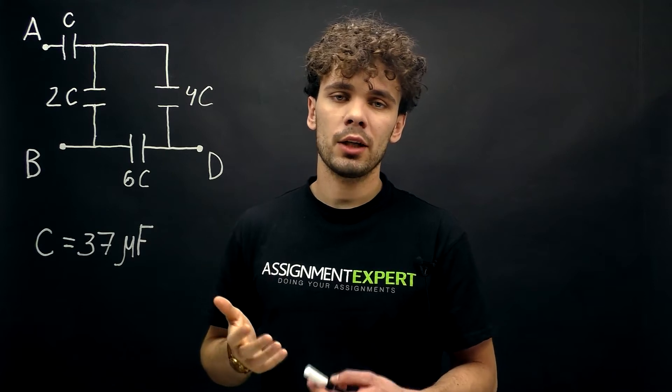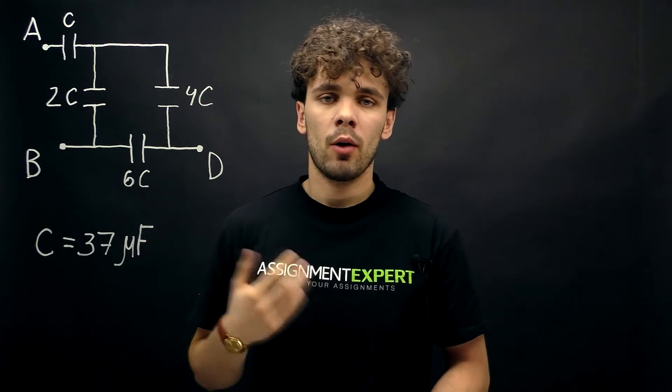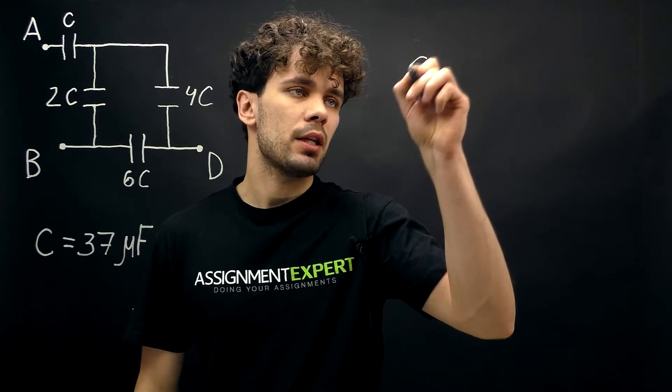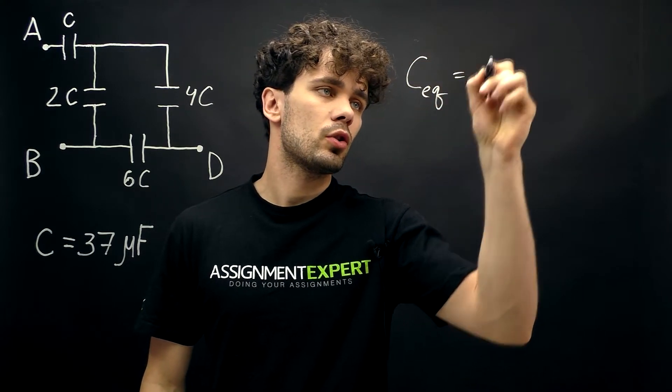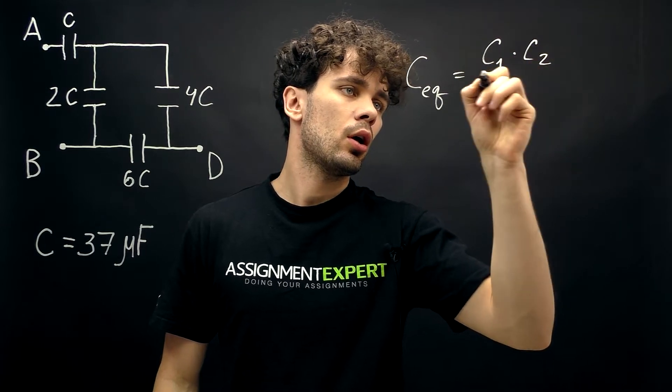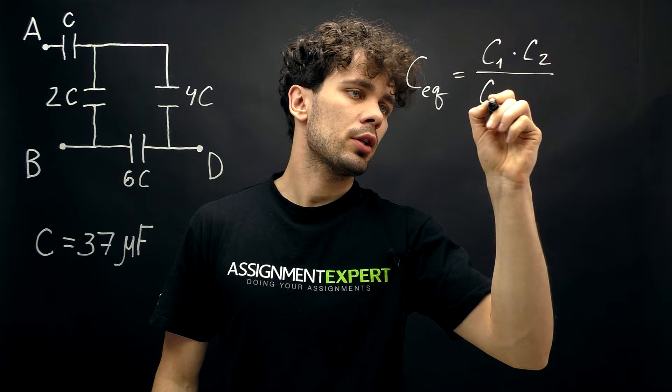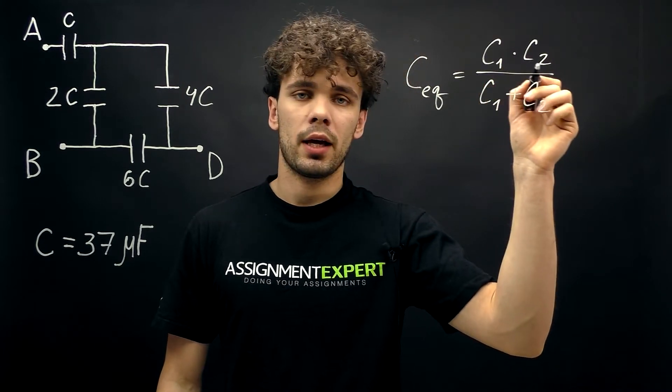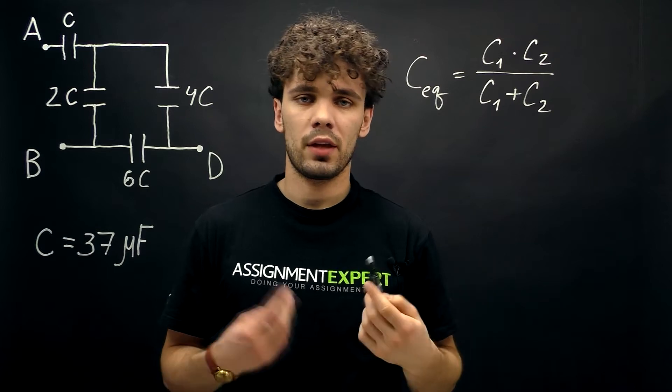And before we start we need to recall two formulas. When capacitors are connected in series their equivalent capacity is equal to C1 times C2 over C1 plus C2, where C1 and C2 are capacities of these two capacitors.